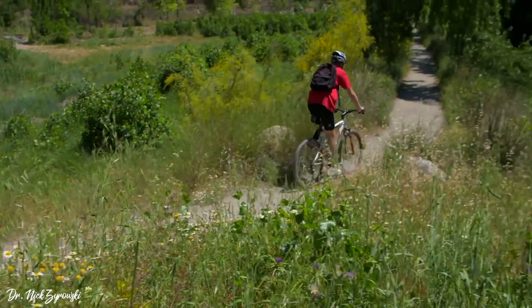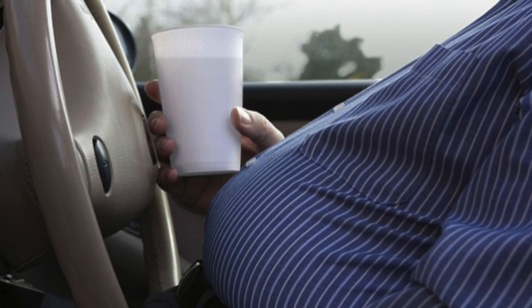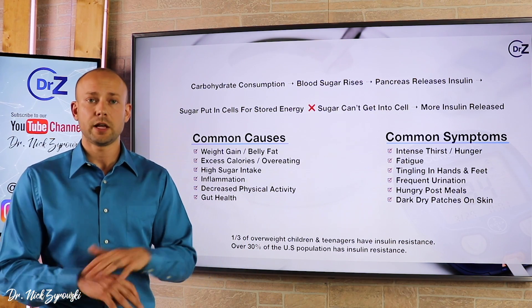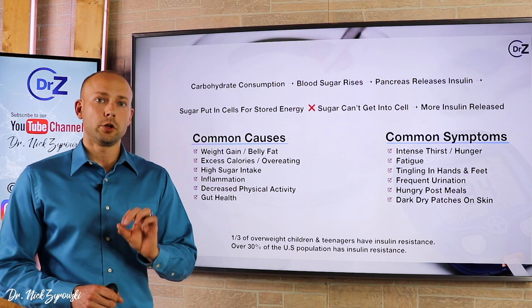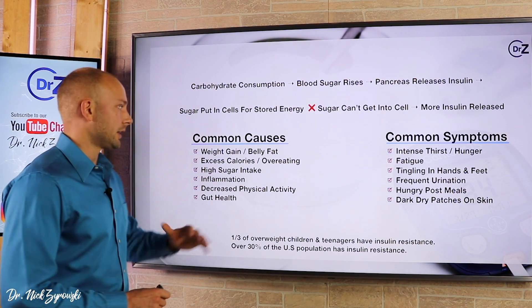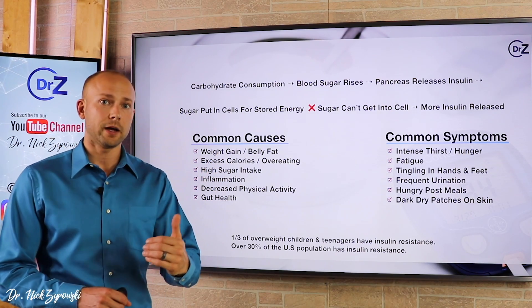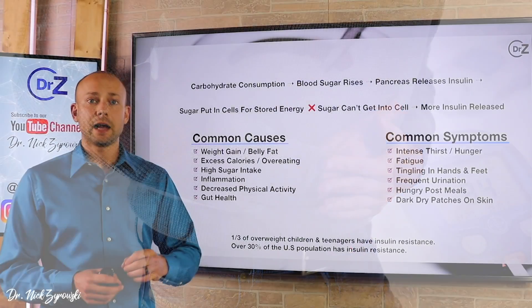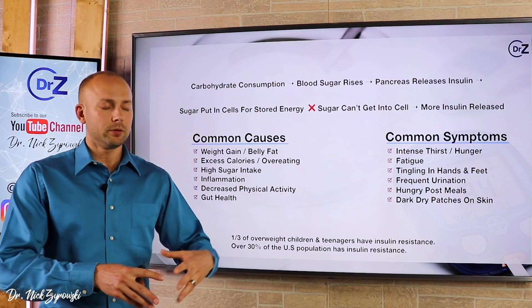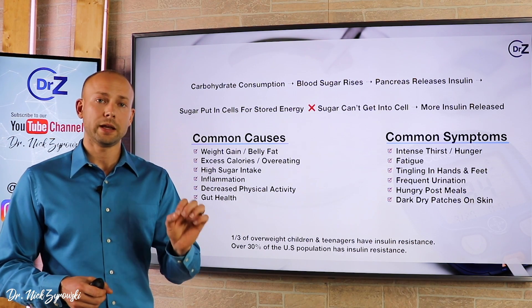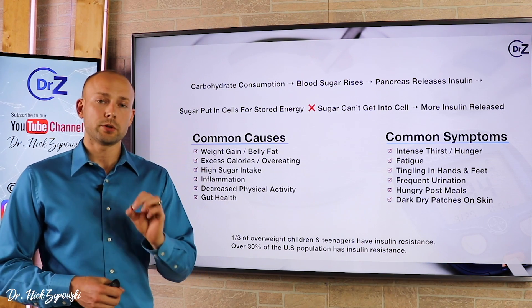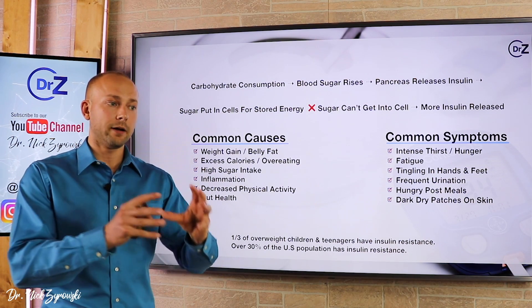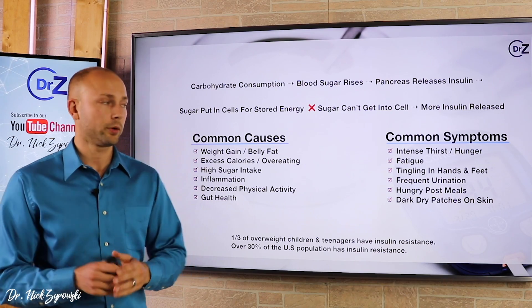Decreased physical activity is another major cause. Too many people are not getting nearly enough physical activity on a daily basis. Most people wake up in the morning, jump in their car, drive to work, sit at a desk all day, jump back in the car, go home, eat dinner, and sit on the couch — day's over. Physical activity is absolutely essential for the human body. Gut health is also almost always a problem when somebody has insulin resistance or diabetes. Researchers have identified that the microbiome is always affected, and there's a particular bacteria that will be deficient. If you have insulin resistance, you have to focus on gut health as well — they go hand in hand.